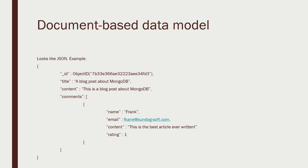MongoDB will automatically give you an underscore ID field that's automatically appended to your document as a unique identifier, because there's nothing in MongoDB that requires a unique field in your document at all. Within that document, we might have the title, the content of the blog post itself, and then a comments field that contains an array of other documents — an embedded document representing a blog comment that itself contains the name, email, content, and rating. You could have multiple of these embedded within the blog post document.